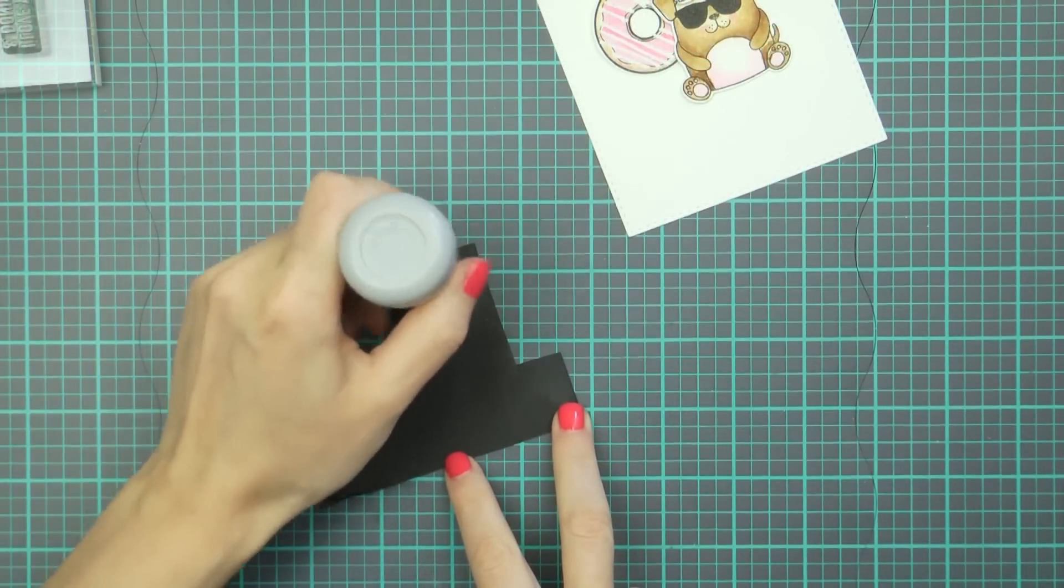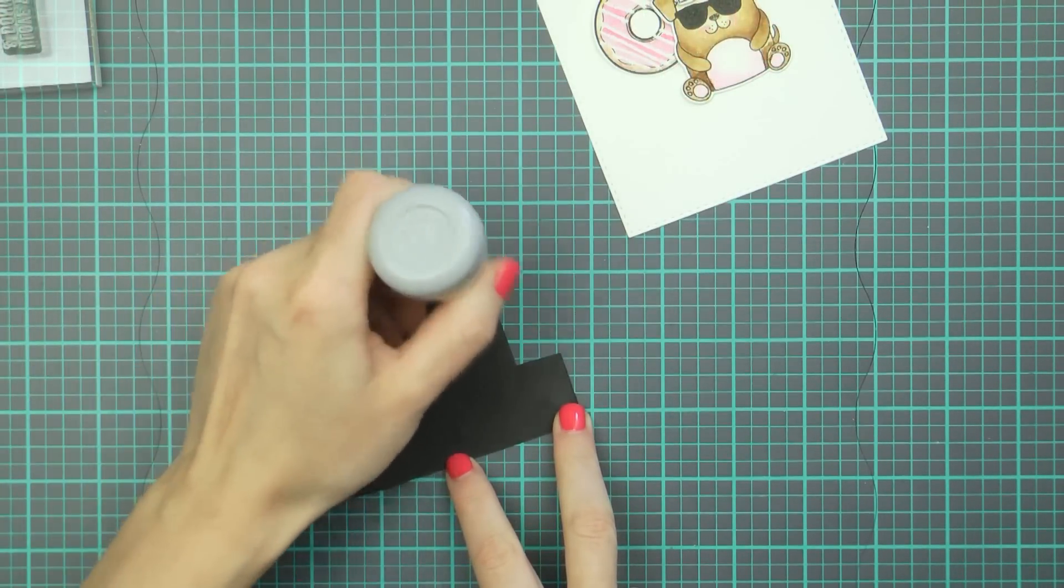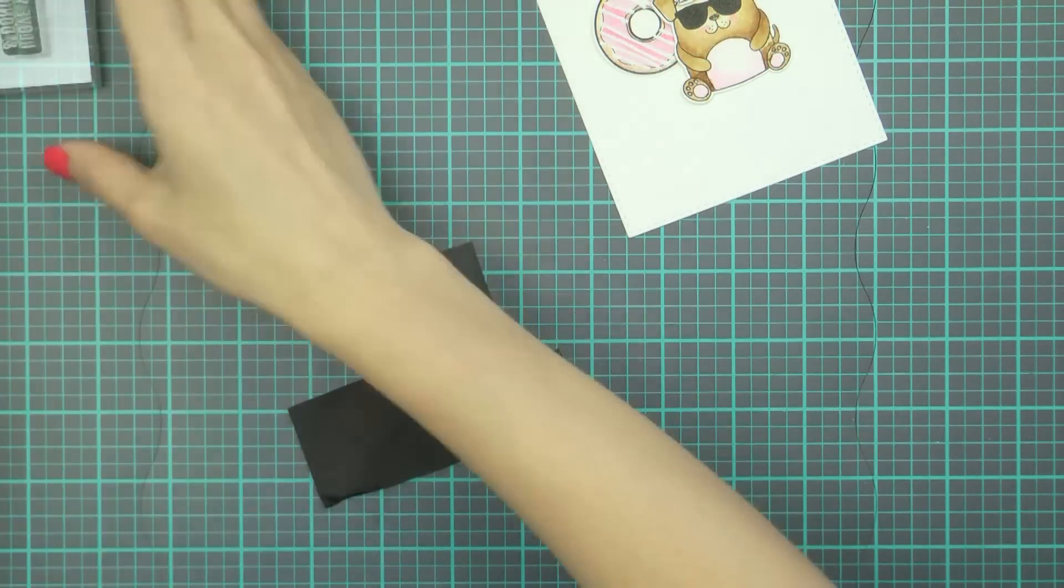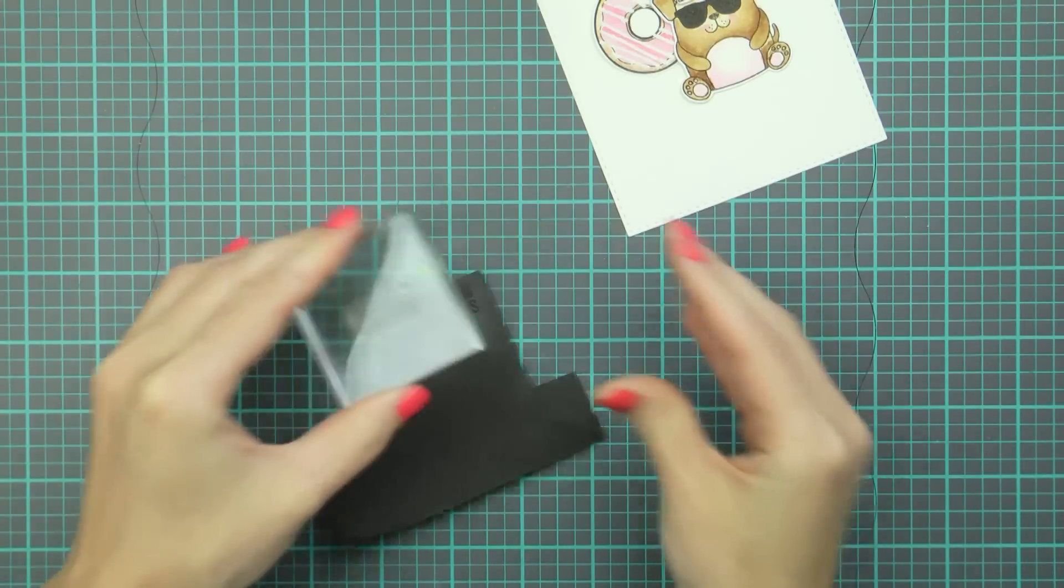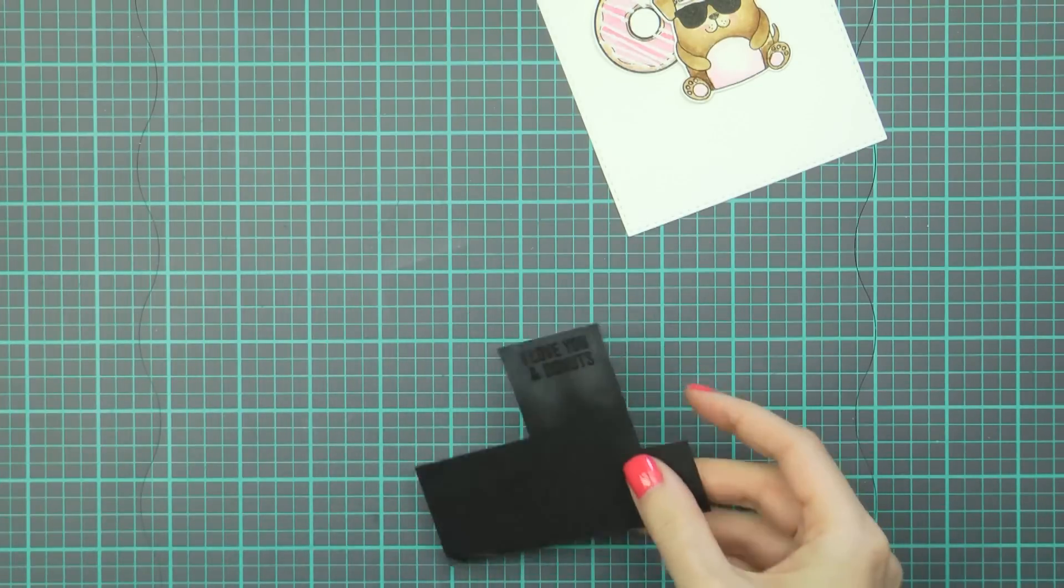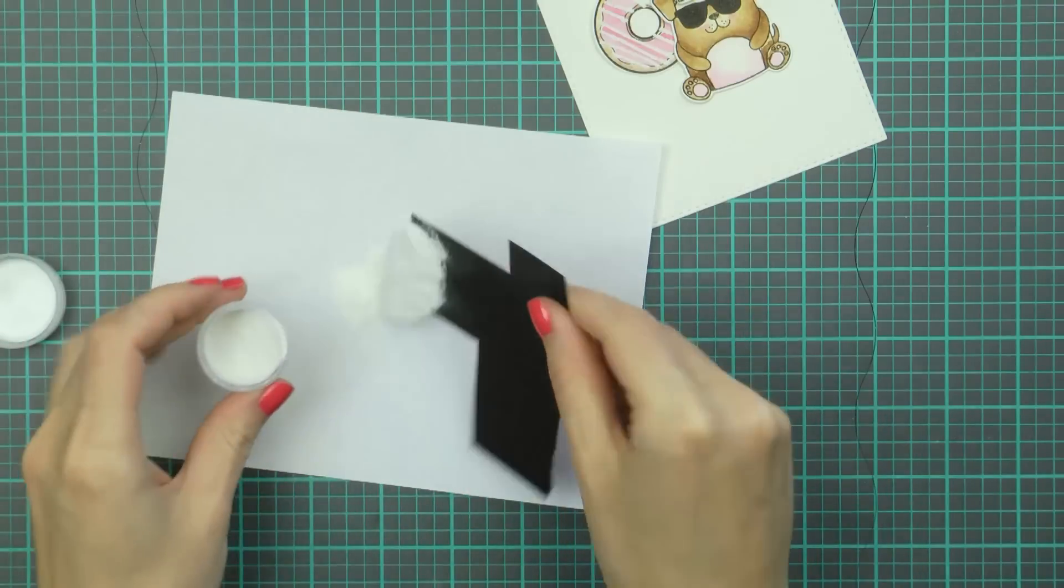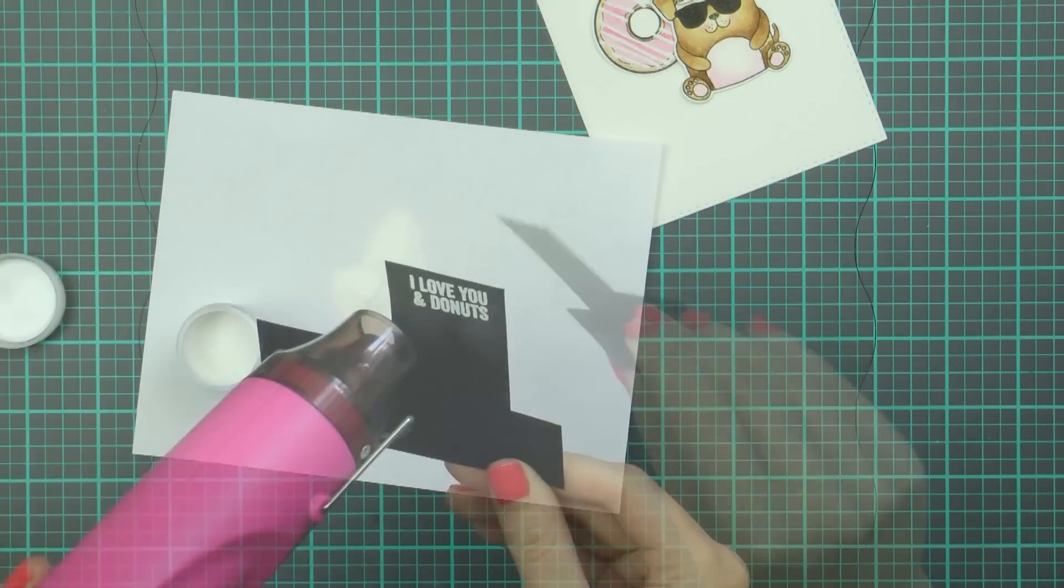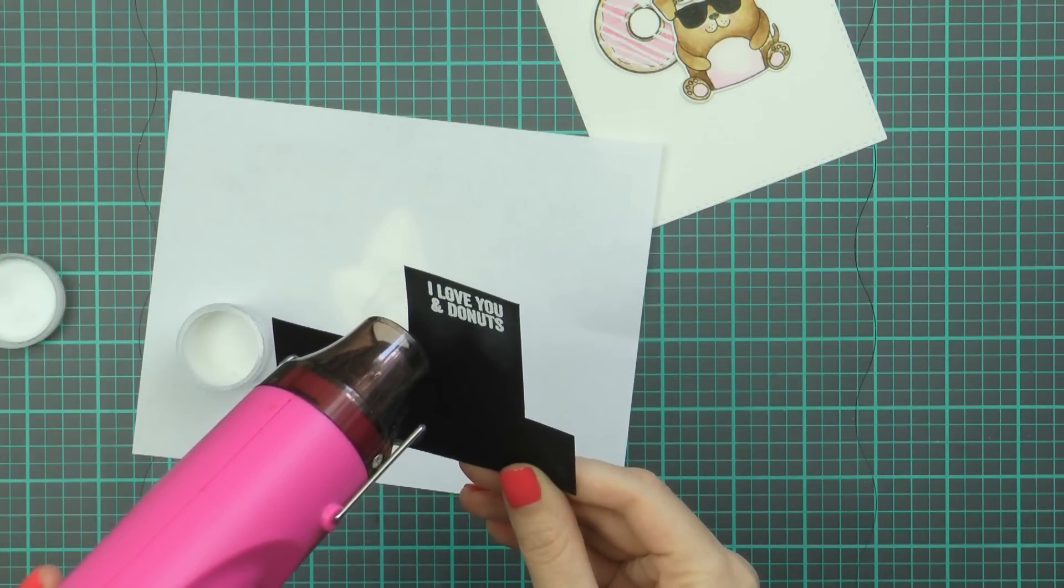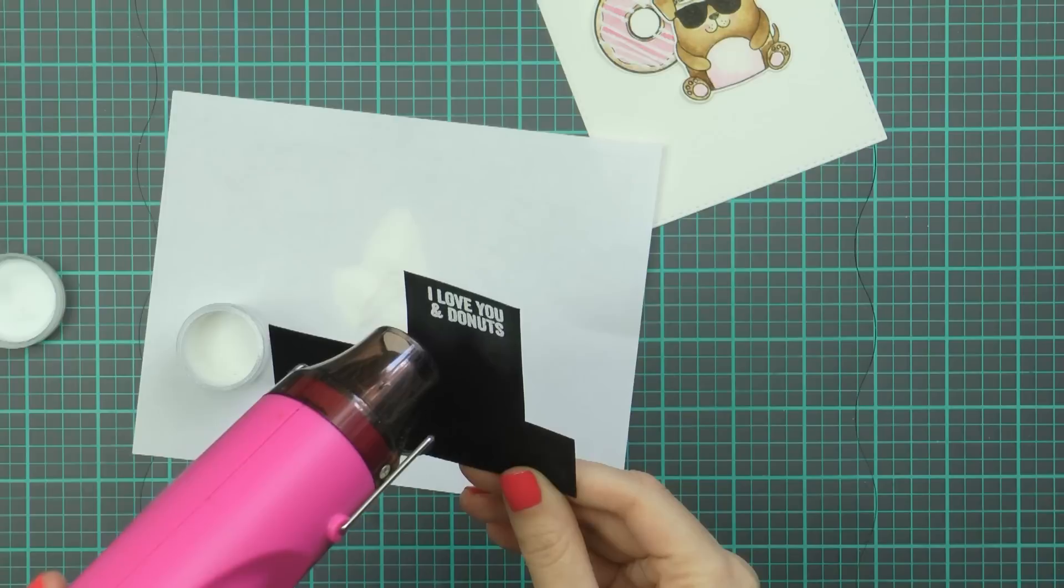Next I arranged the images on my panel the way I envisioned them and I heat embossed the sentiment in white embossing powder, I used WOW opaque bright white and embossed it onto black cardstock.